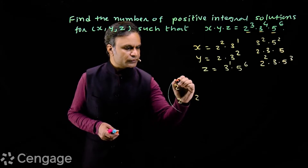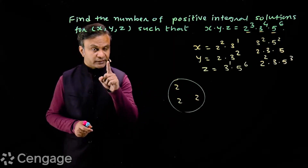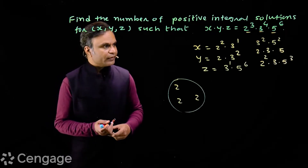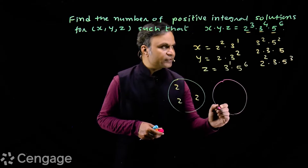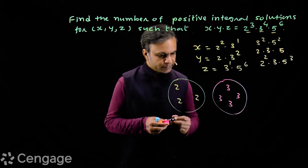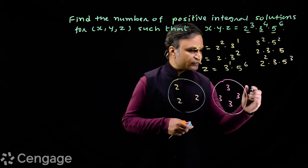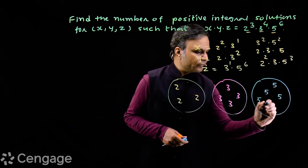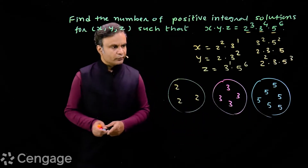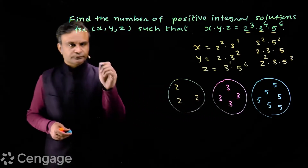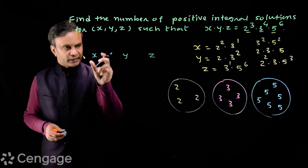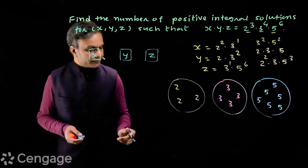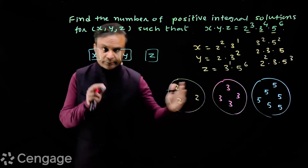We have 2, 2, 2 — a group of 3 identical objects. Then we have 4 identical objects of another kind: 3, 3, 3, 3. And then we have 6 identical objects of a third kind: 5, 5, 5, 5, 5, 5. Now, what we are doing is distributing these objects into 3 distinct boxes named x, y, and z.